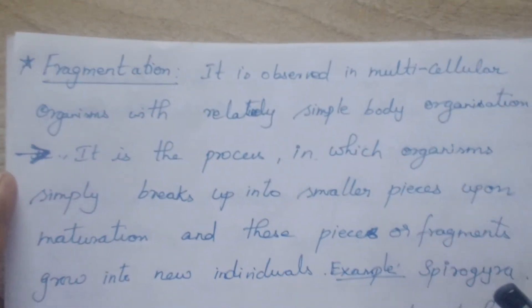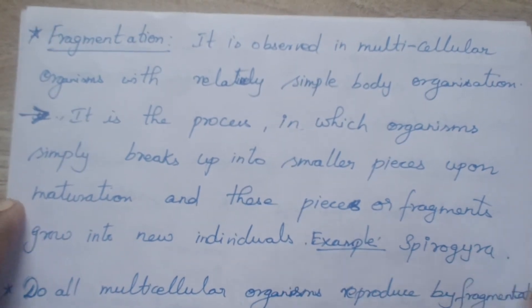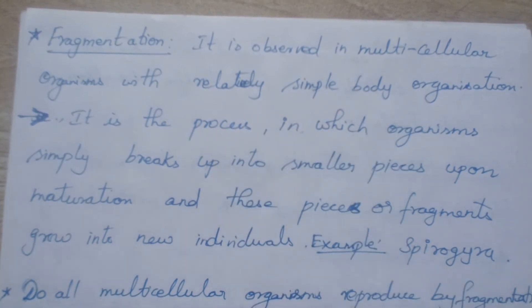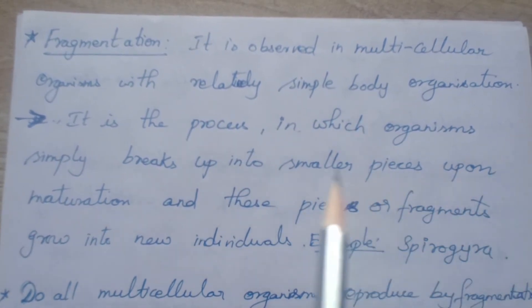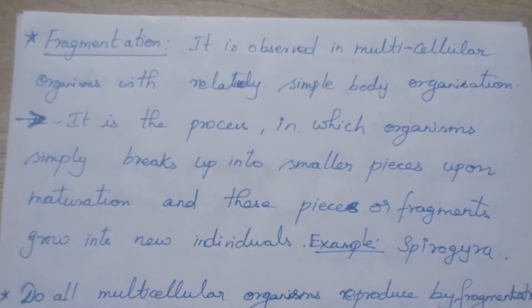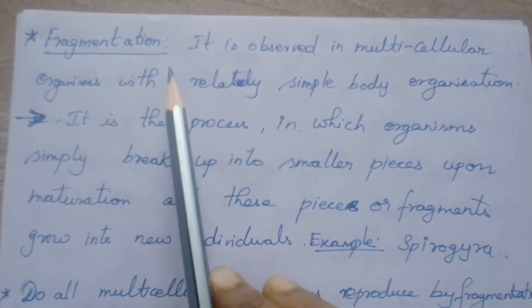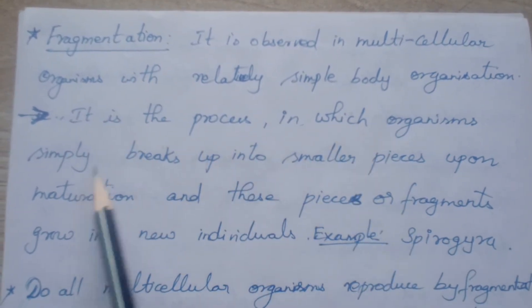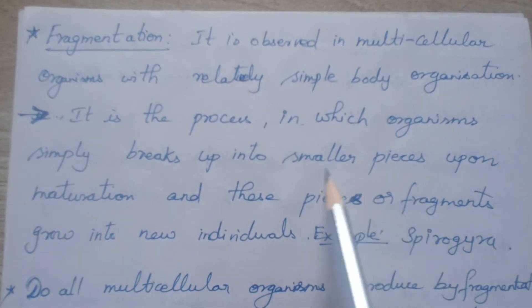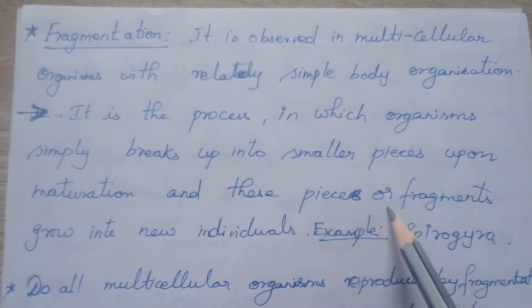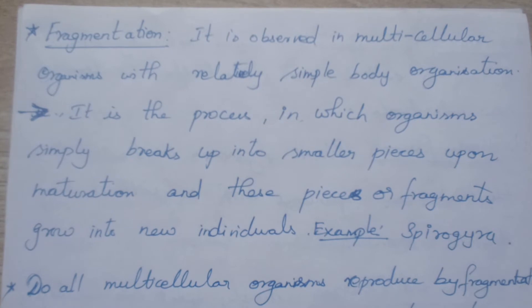The next type of asexual reproduction is fragmentation. It is observed in multicellular organisms with relatively simple body organization — meaning they do not have separate organs for each life process. Fragmentation is a process in which an organism simply breaks up into smaller pieces upon maturation. Once it is matured, it breaks into smaller pieces, and these fragments grow into new individuals.